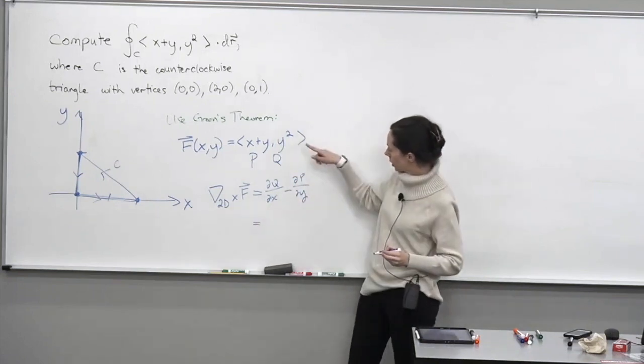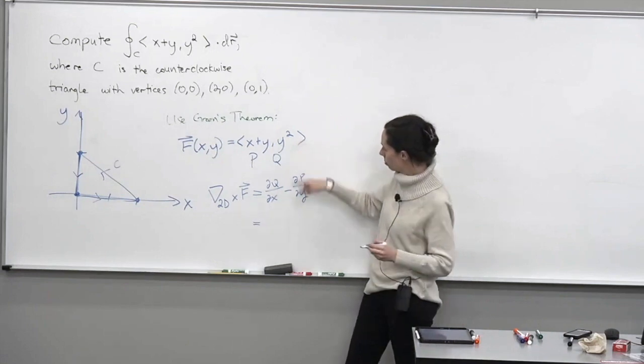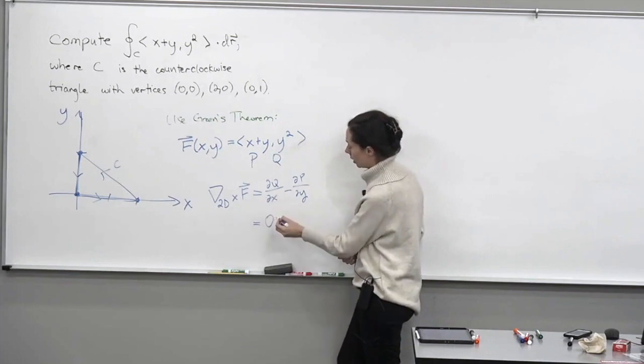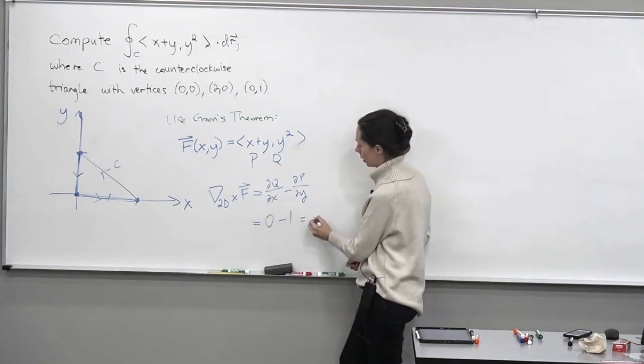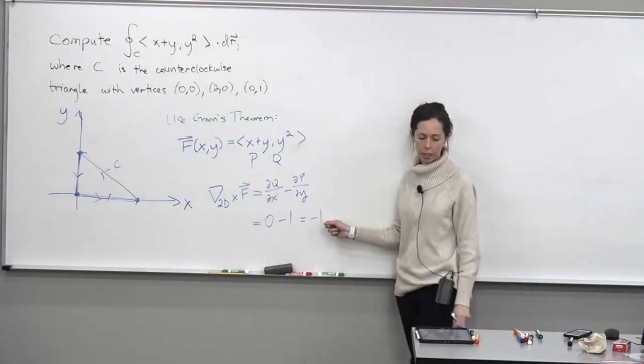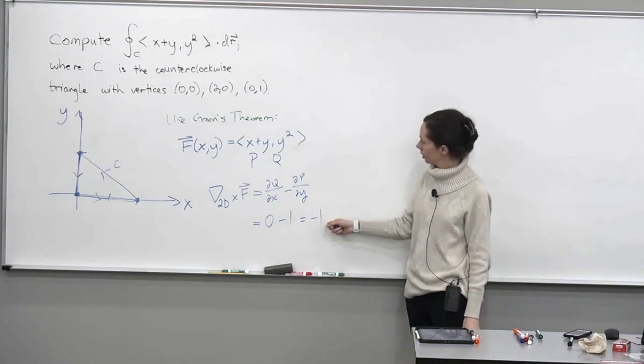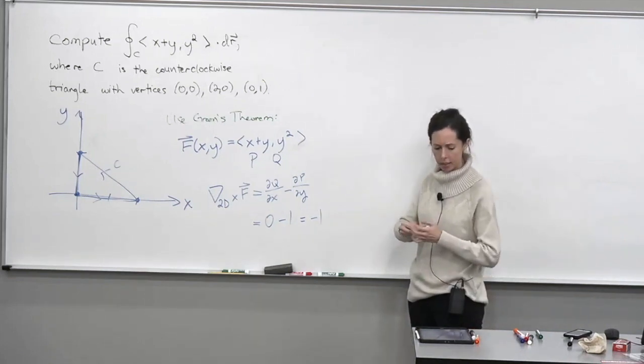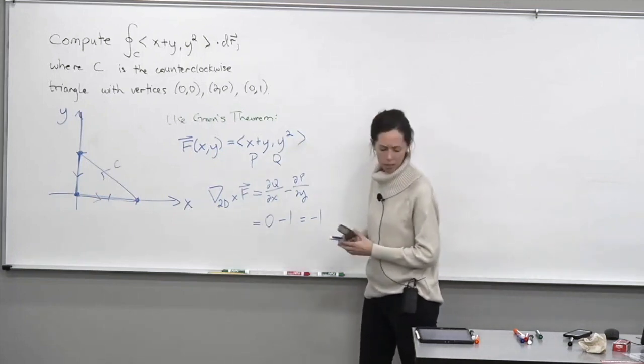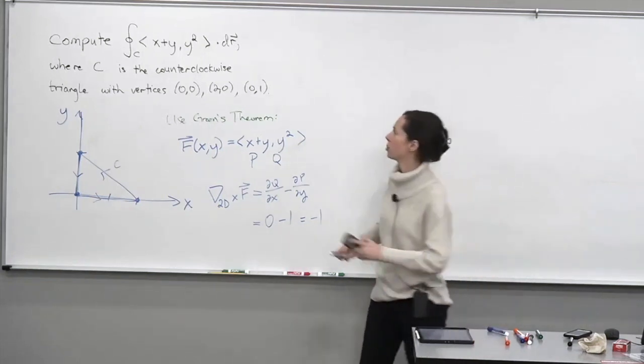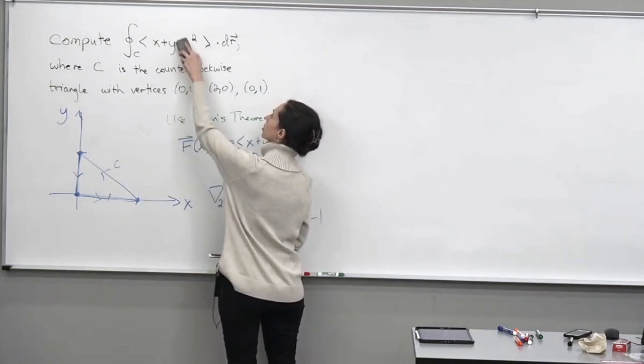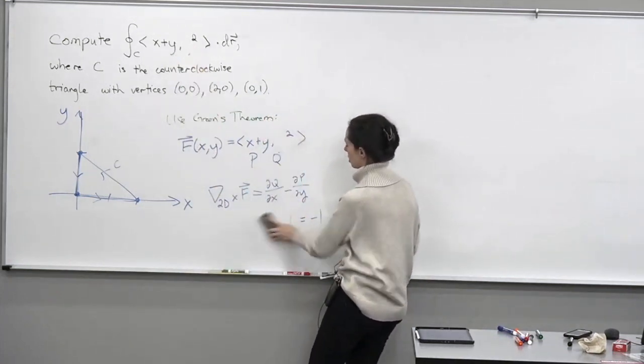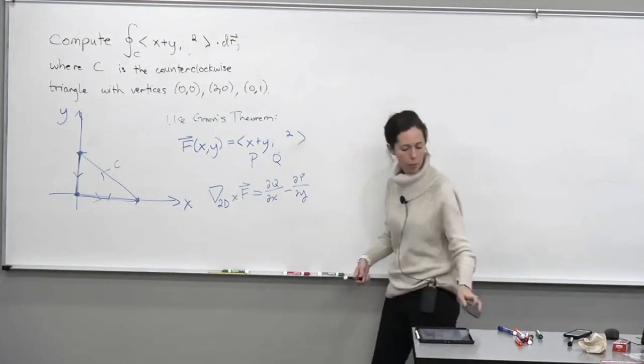Okay, so DQ/dx is zero, and DP/dy is one. So we're going to take the 2D scalar curl of, did I write this down wrong? Yes, I did. Let me just switch something so that it matches the problem I posted. This was supposed to be x squared. It doesn't matter, but let me just make it match the problem I actually gave.